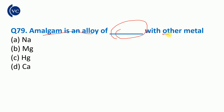Next question: amalgam. Amalgam is an alloy of mercury with other metals. When mercury is mixed with any other metal, the resulting alloy is called amalgam.